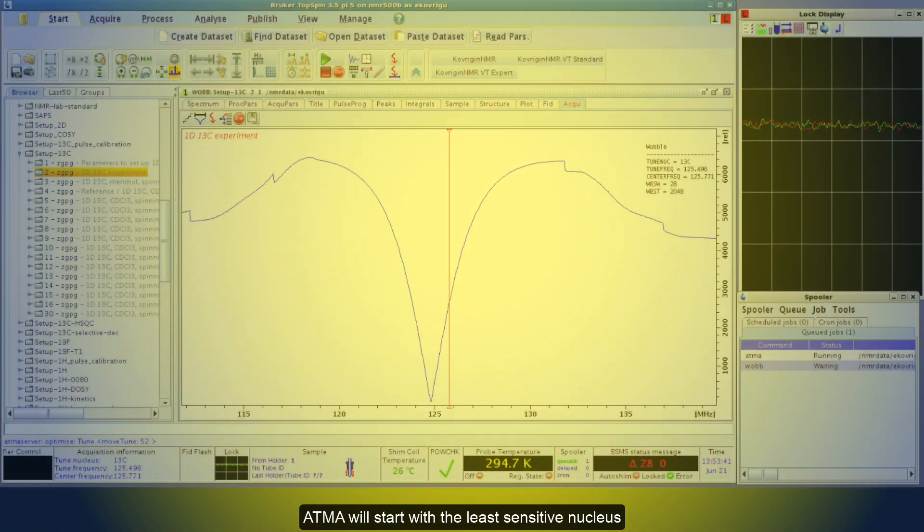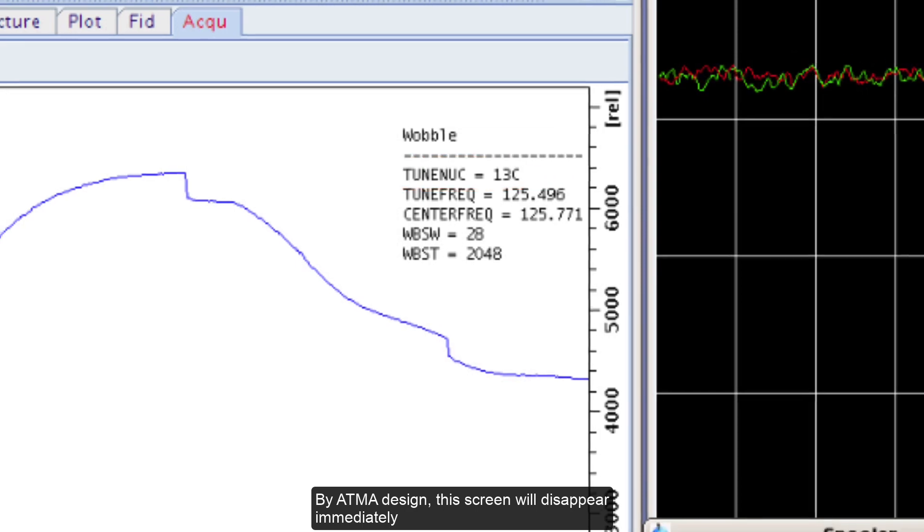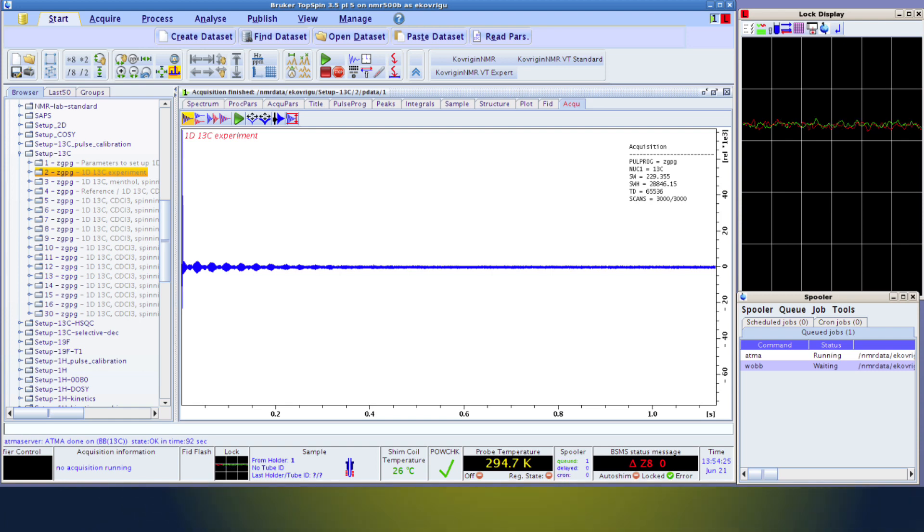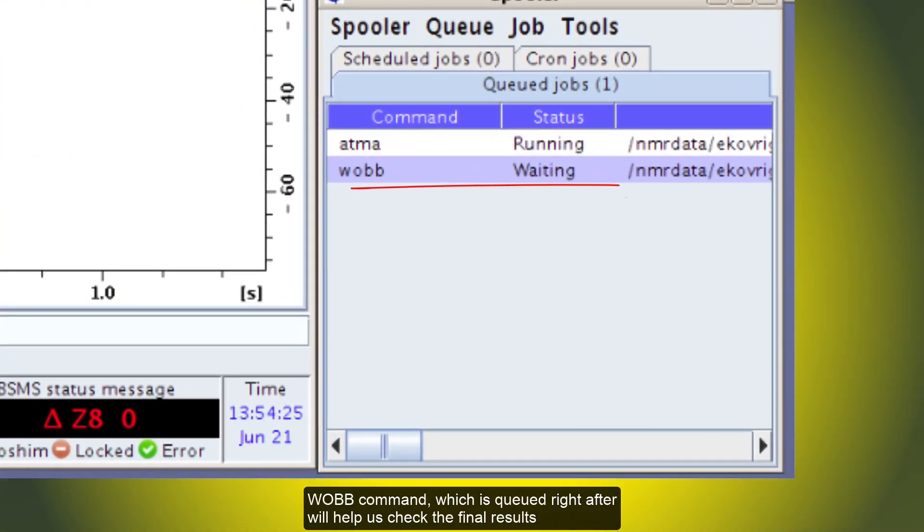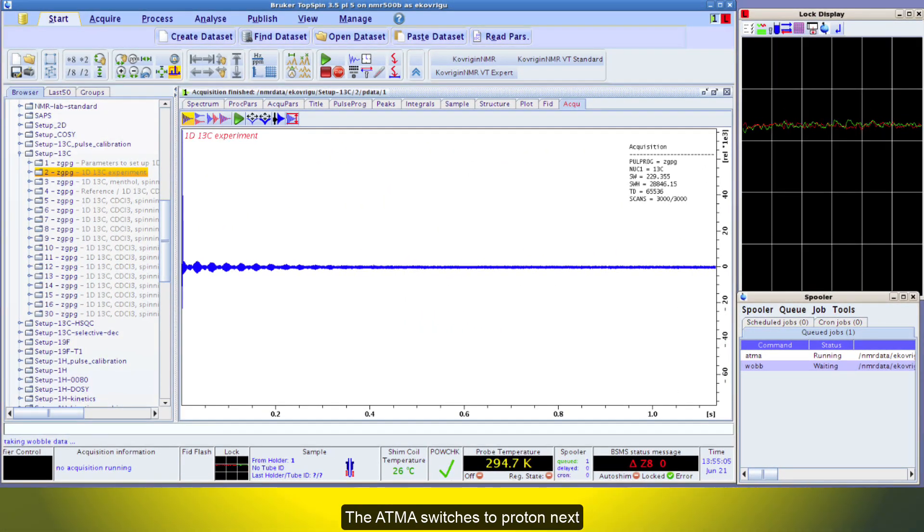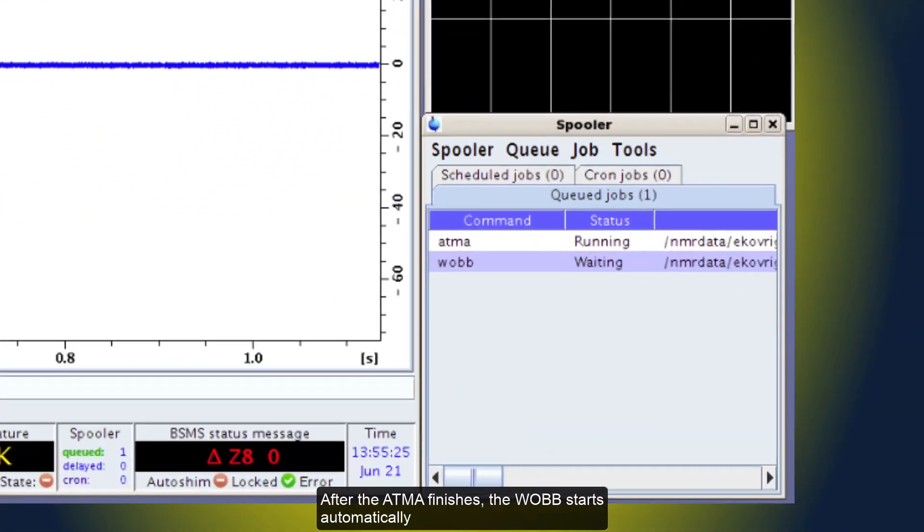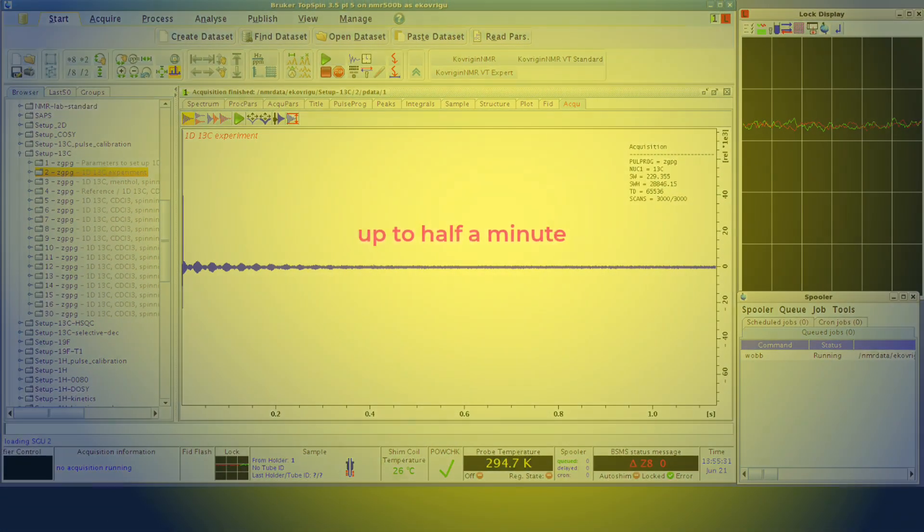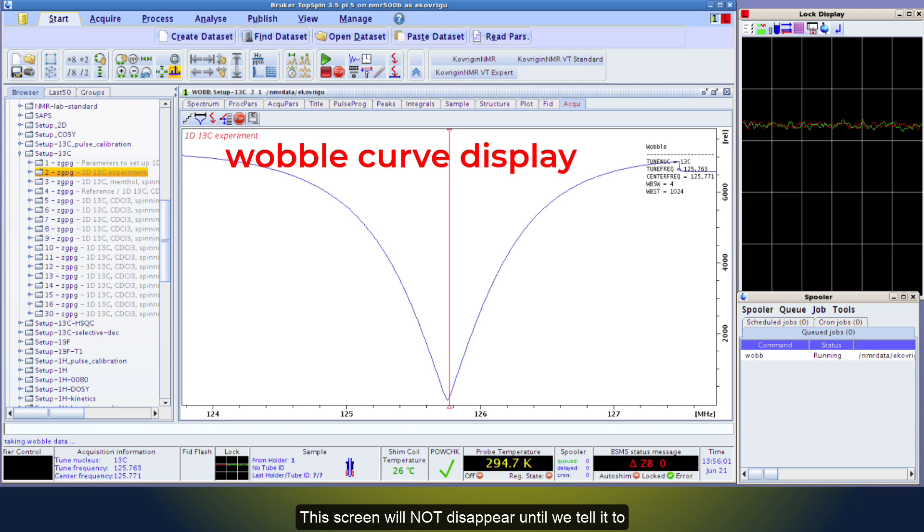The ATMA will start with the least sensitive nucleus, which is carbon in my case. By the ATMA design, the screen will disappear immediately, as the ATMA finished with the nucleus. Therefore, the result is often easy to miss, but no worries. Wob command, which is queued right after, will help us check the final results. The ATMA switches to Proton next. And after ATMA finishes, the Wob starts automatically.